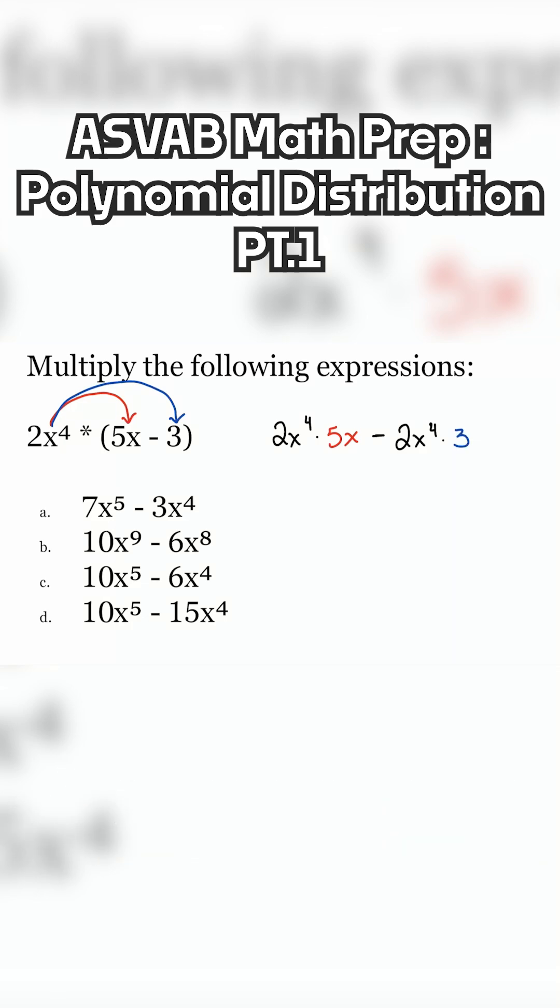So now we'll move forward and perform our operation. We have 2x to the power of 4 multiplied by 5x. When we're multiplying, I simply multiply the coefficients first. 2 times 5, that's going to give us 10. And then we have x to the power of 4 multiplied by another x. How many x's do we have being multiplied all together? Yeah, we have 5 x's multiplied together.